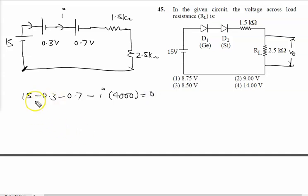So this is 15 minus 1 is 14. 14 equal to I into 4000. So I equal to 14 upon 4000. This is the value of I.